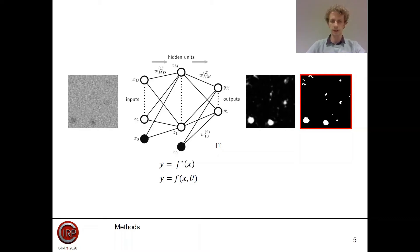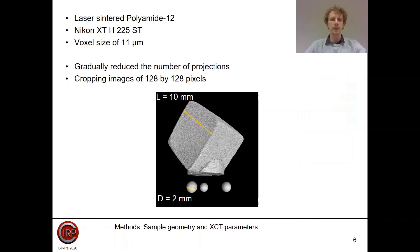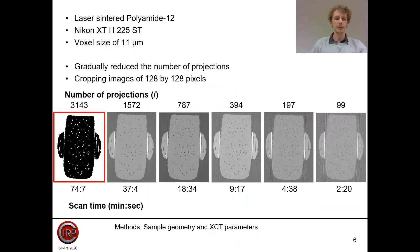I will first start by explaining how we acquired the data. We scanned a polymer laser-sintered cube with a Nikon X-ray CT system. The cube has a size of 10 millimeters and we started gradually reducing the number of projections. We acquired one high-quality scan with 3,000 images and then five different low-quality images.